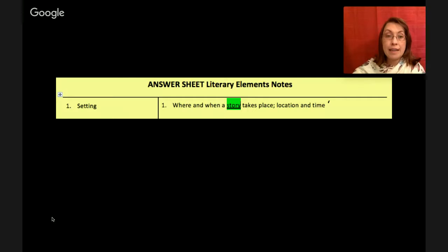First we have the setting. Now the setting is where and when a story takes place, the location and time. Notice on the screen that I have underlined and highlighted in green the item that you need to fill in on your notes. So go ahead and write in story if you haven't done so yet.